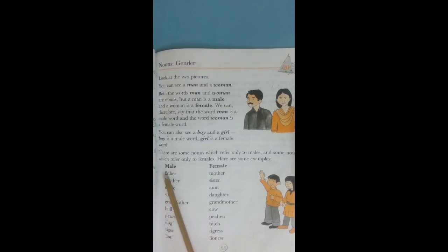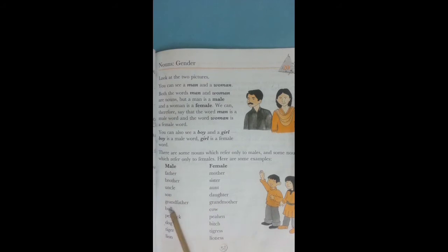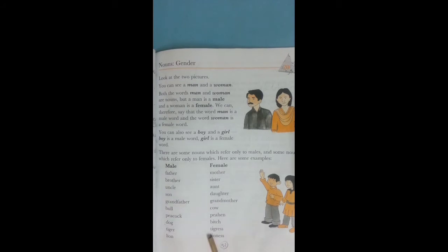Start to read the words: father, mother, brother, sister, uncle, aunt, son, daughter, grandfather, grandmother, bull, cow, peacock, peahen, dog, bitch, tiger, tigress, lion, lioness.